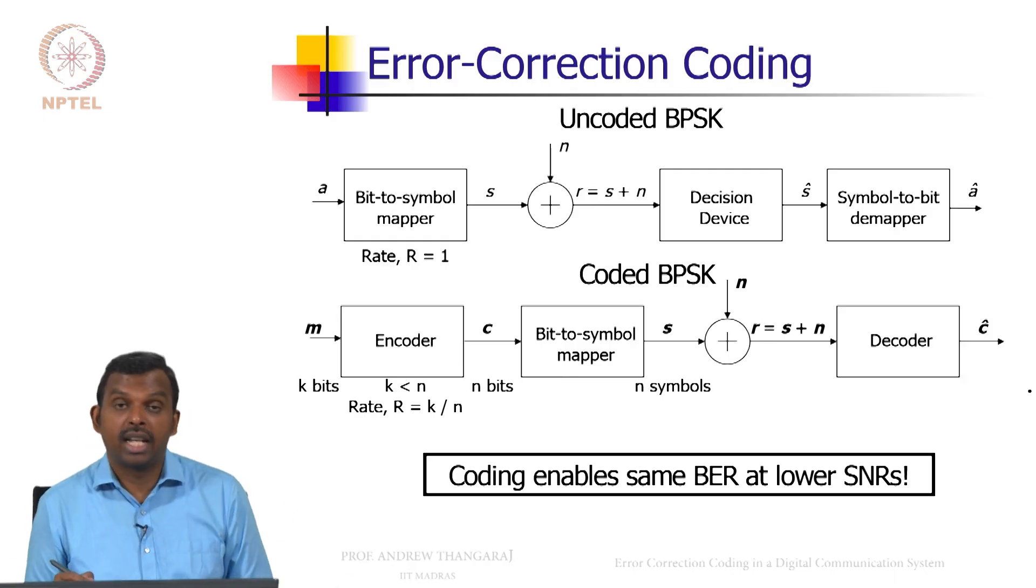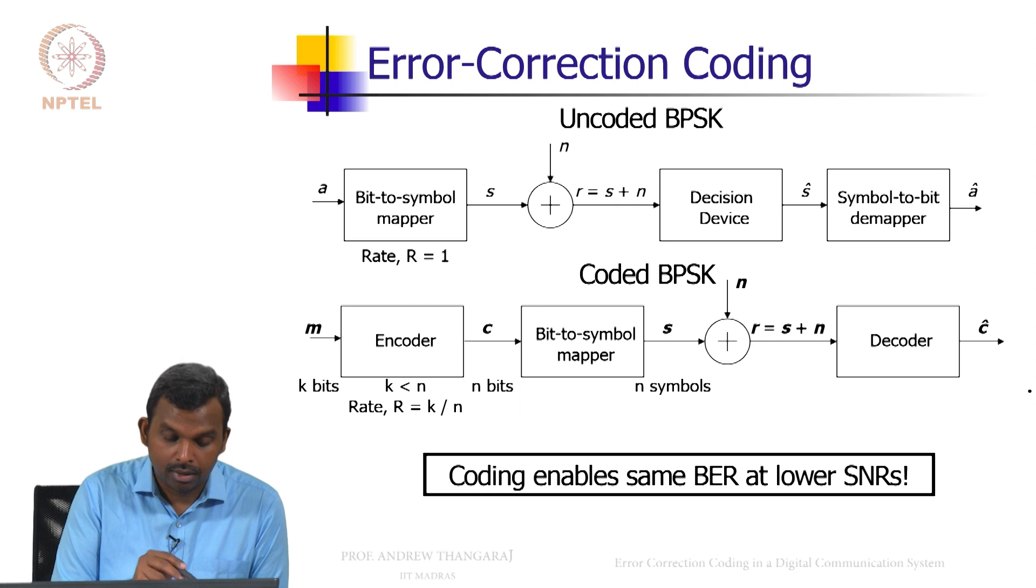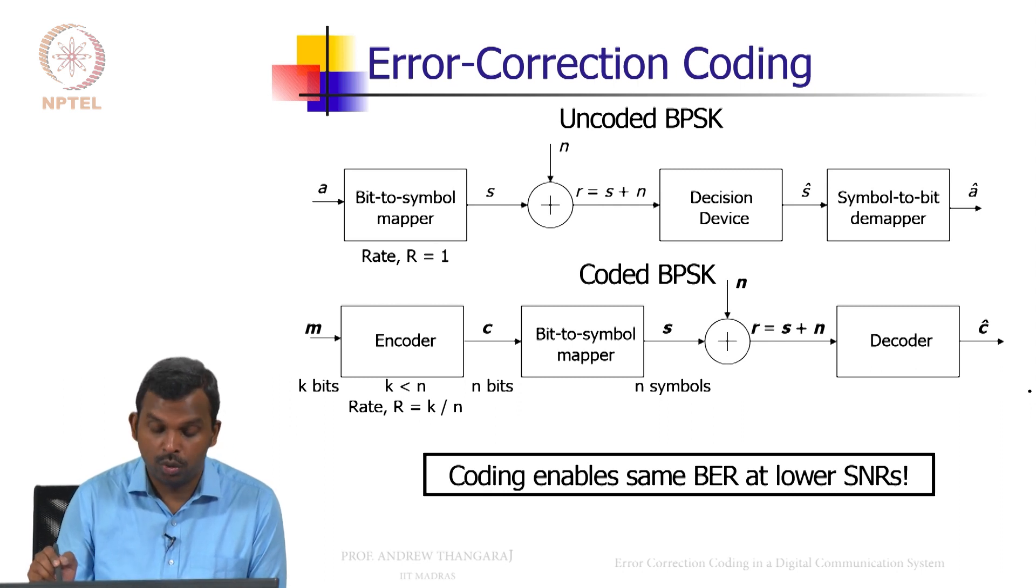Now we are ready to say what error control coding does to an uncoded BPSK system. Here you have an uncoded BPSK system: you have a bit, you convert it into a symbol, noise gets added, there is a decision device, you do a symbol to bit mapping.